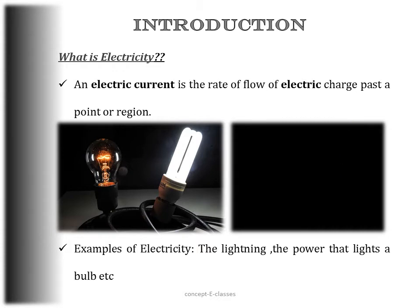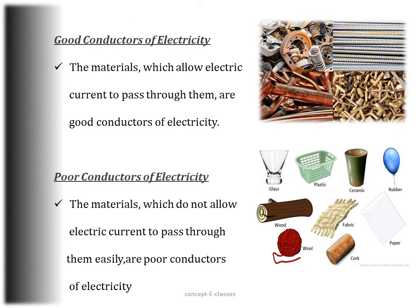For example, the lightning that we see in the sky or the power that lights a bulb — these are all due to electricity. Now, the materials which allow electric current to pass through them are called good conductors of electricity. For example, metals like silver, copper, gold, aluminium, zinc, steel, and brass are all good conductors of electricity.